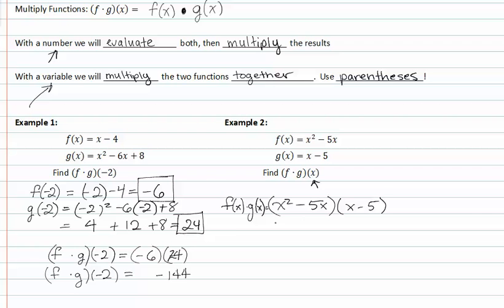Foiling, we get x to the third minus five x squared minus five x squared plus twenty-five x. Combining like terms, we get x to the third minus ten x squared plus twenty-five x.